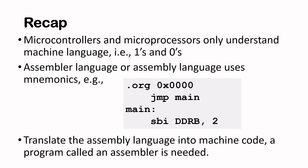Let's do a quick recap. Microcontrollers and microprocessors only understand machine language — meaning 1s and 0s. Assembly language uses mnemonics. I've given you a snippet of a program, and mnemonics refer to words like JMP, which is short for jump, and SBI, and so on. These are mnemonics.